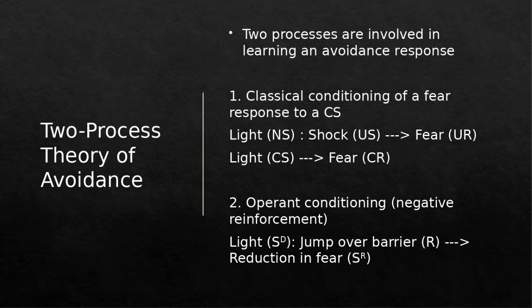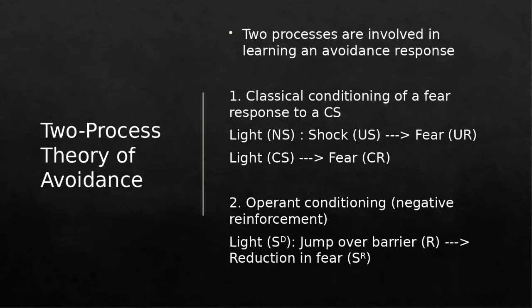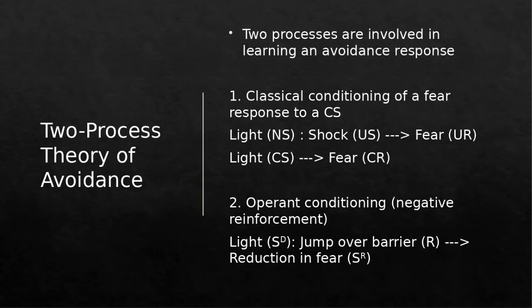The second part of the two-process theory is an operant conditioning response — the negative reinforcement portion. The light has become a discriminative stimulus that lets the mouse know that if it jumps over the barrier, this response leads to the reinforcement of a reduction of fear. They've learned to fear the light; the light signals that jumping over the barrier will reduce that fear. So in this theory, what the animal is avoiding is the experience of fear — performing the behavior moves it from a state of experiencing fear to a state of not experiencing fear.